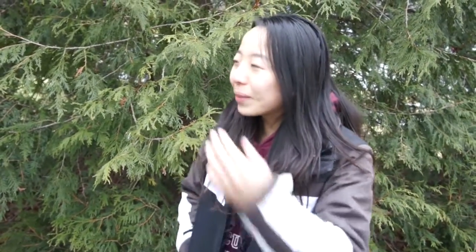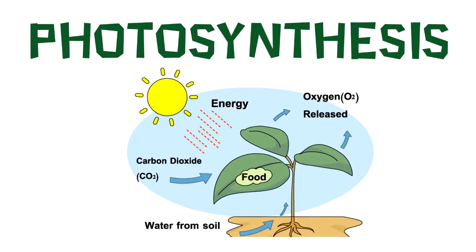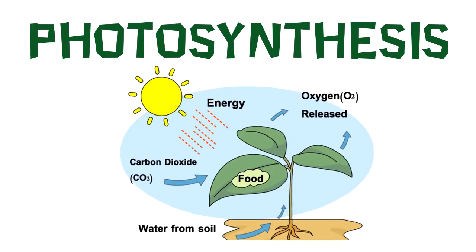So, rabbits are herbivores, lions are carnivores, and bears are omnivores? Yeah, exactly. And even us humans can be seen as omnivores because we eat both plants and animals. And plants can be seen as producers, because plants use a process called photosynthesis in order to create energy from sunlight.